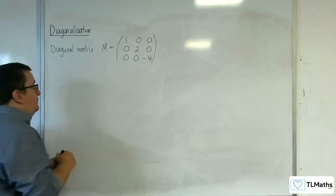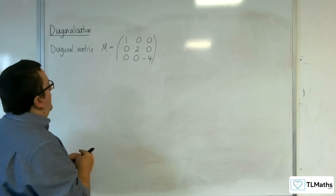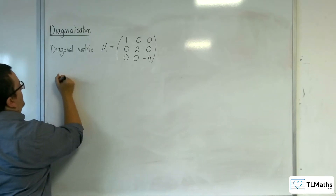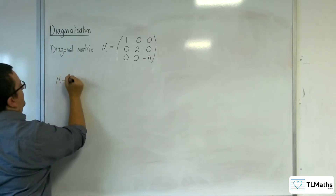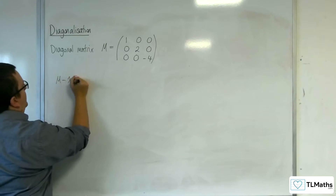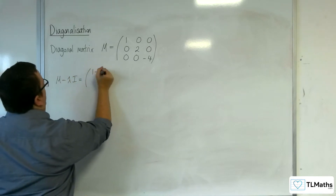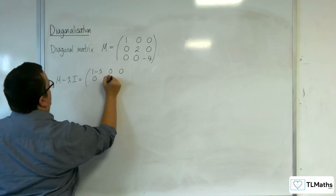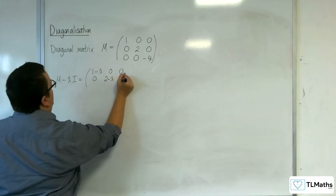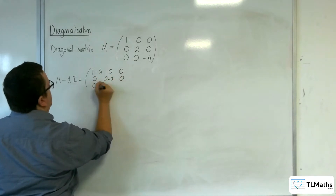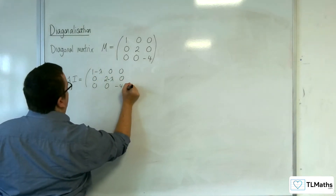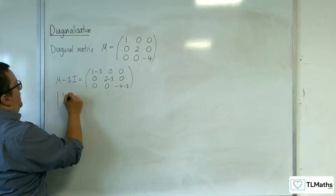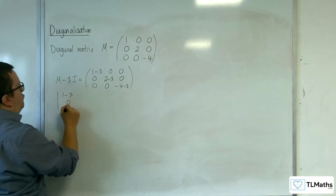In working out its eigenvalues, we would be looking at the matrix M take away lambda I, which of course is: (1 - λ, 0, 0), (0, 2 - λ, 0), (0, 0, -4 - λ). We want the determinant of that matrix to be equal to 0.